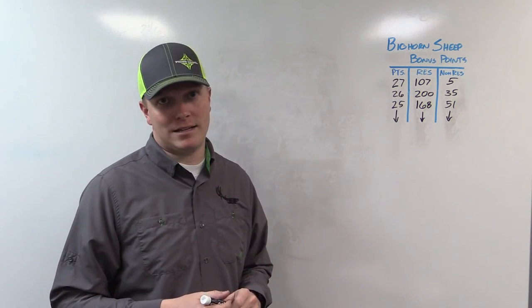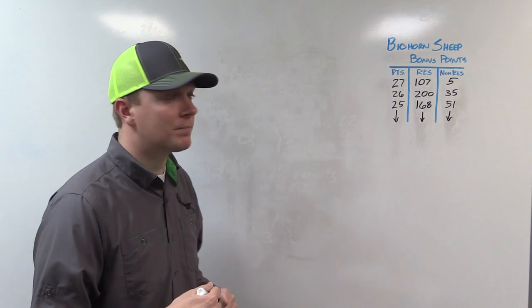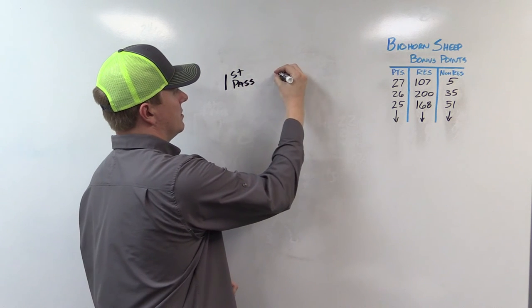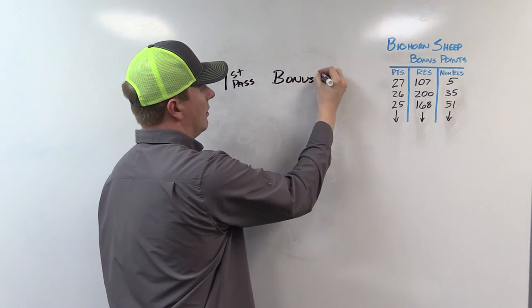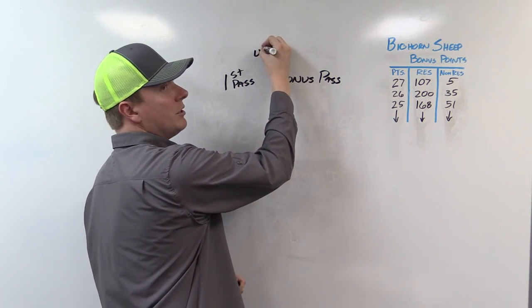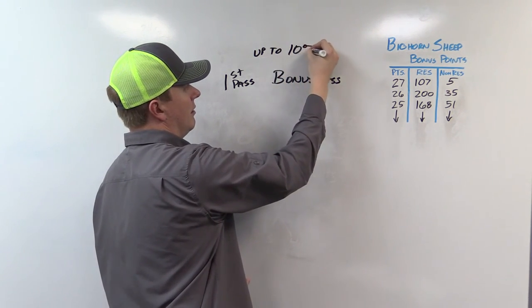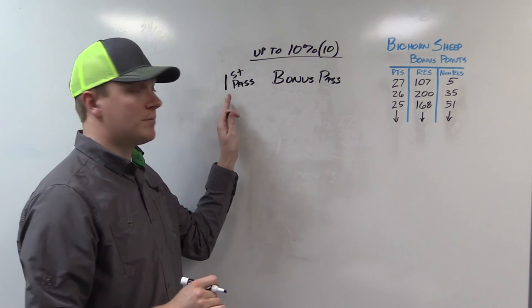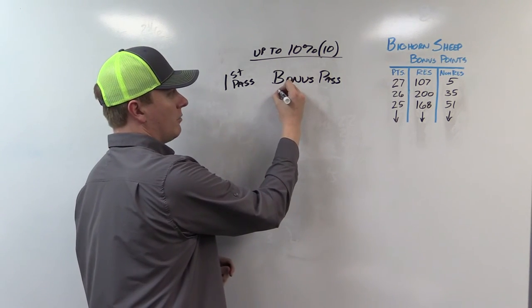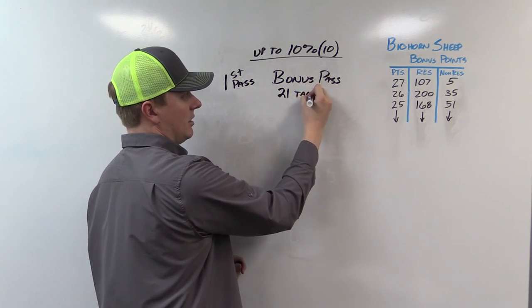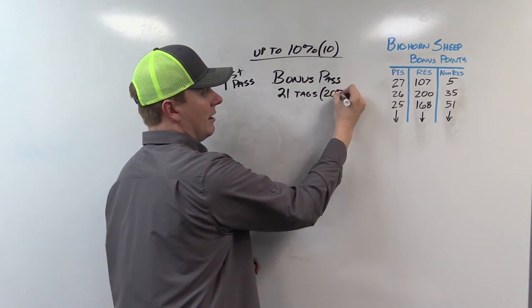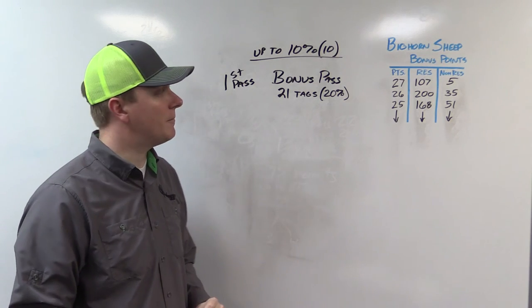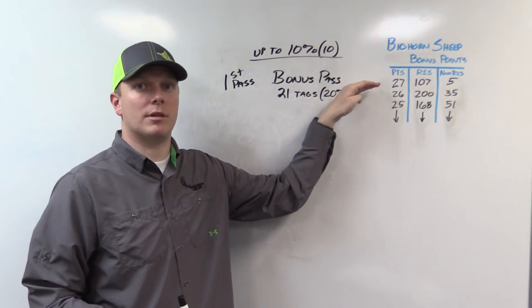Alright, so let's look at each of the passes that happen in this sheep draw. The first pass is called the bonus pass. Now remember we are trying to get our up to 10% or 10 tags, our non-resident quota. The first pass is the bonus pass. In this pass we award 21 tags this year, which is essentially 20% of all 105 tags available. 21 tags have to be given in this bonus pass.